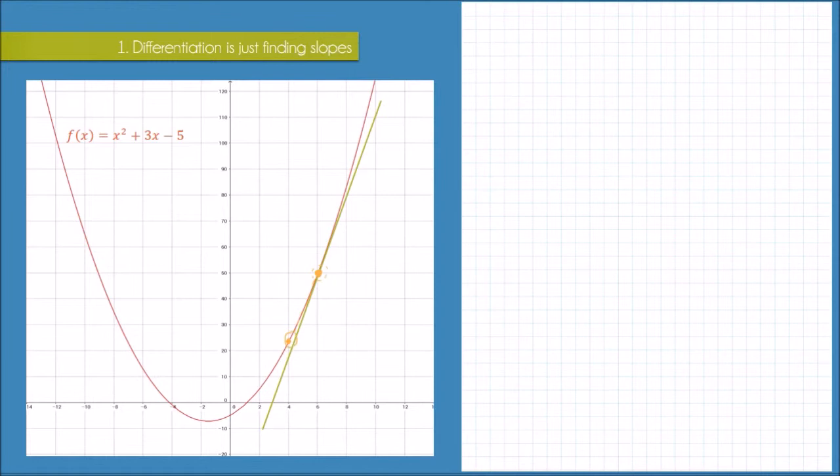Now you can see here that this secant line has a similar slope to the green tangent line. It wouldn't be the exact same, but it would be a good approximation of the slope of the tangent line.